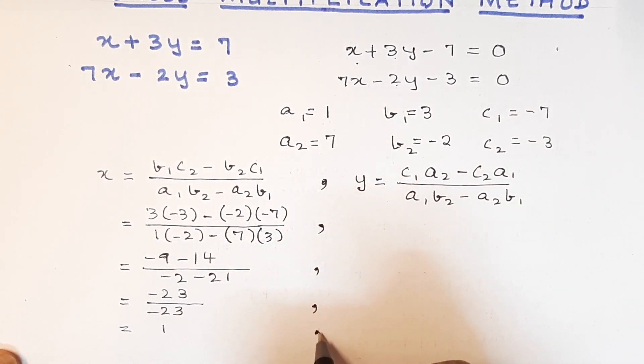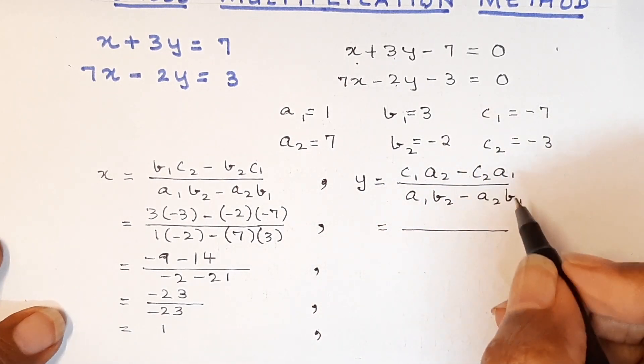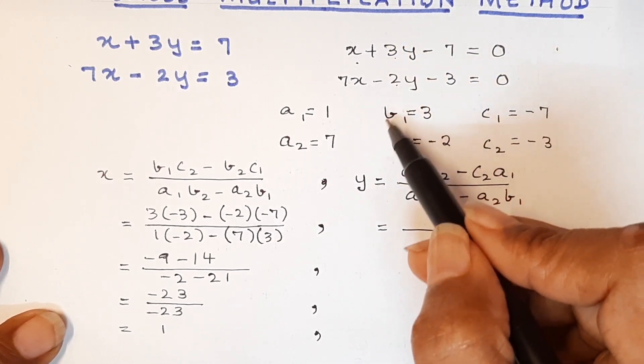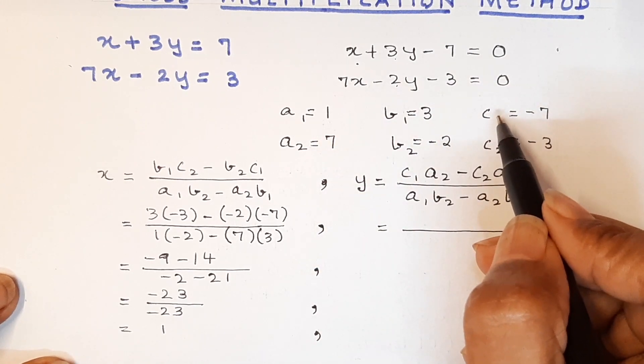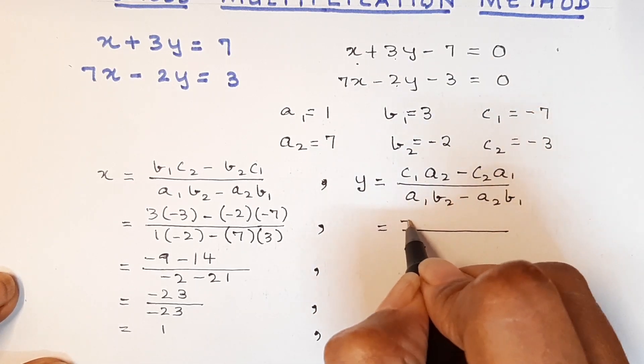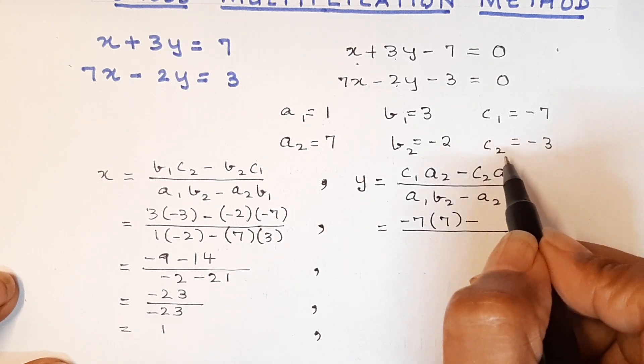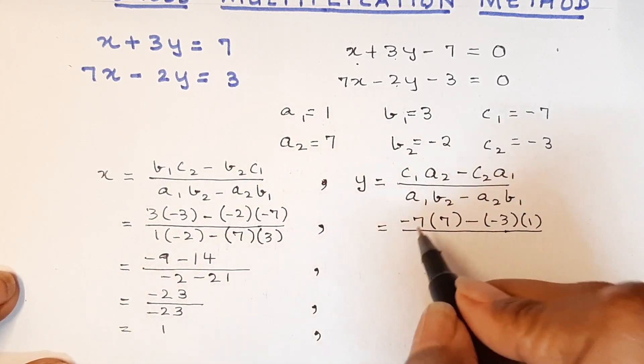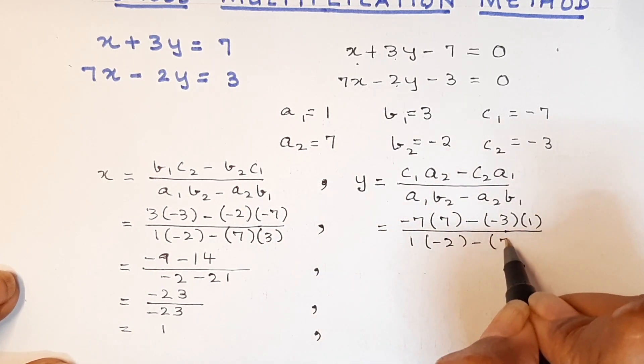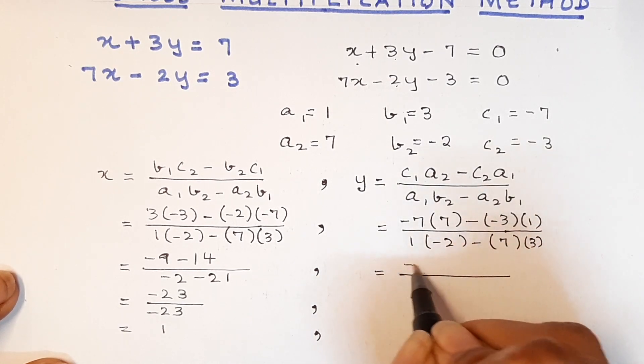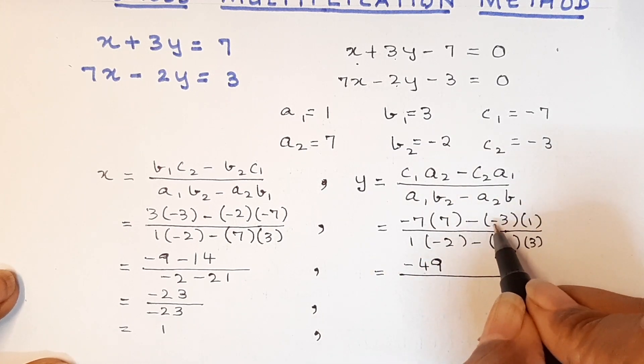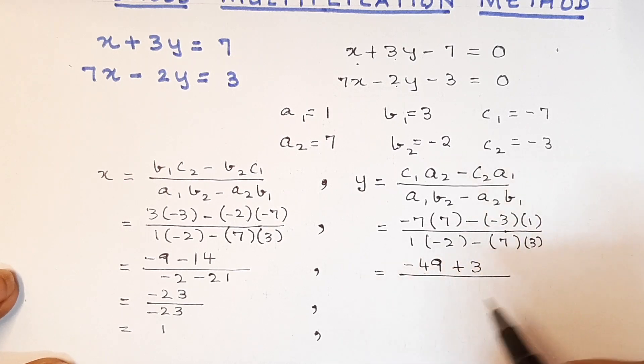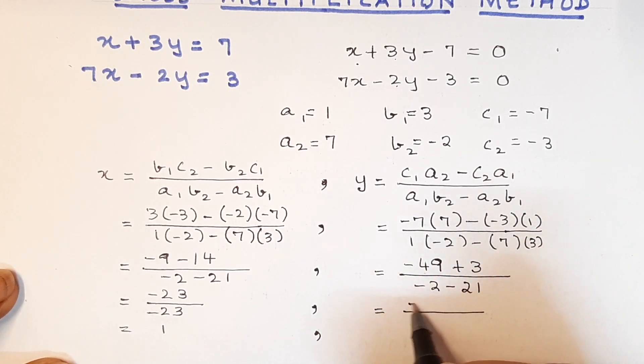Now let us look at our y. Our y value will be, as you saw, we will not take the coefficients of y. So we will take c and a. It will be c1a2. c1a2 will be minus 7 into 7 minus c2a1. So it will be minus 3 into 1. Denominator is the same. That will give us in the numerator minus 49 and here it will be minus into minus is plus. So it will be plus 3, and now it becomes minus 2 here and minus 21. That will give us minus 46 upon minus 23, minus sign got cancelled, and so I will get y as 2.